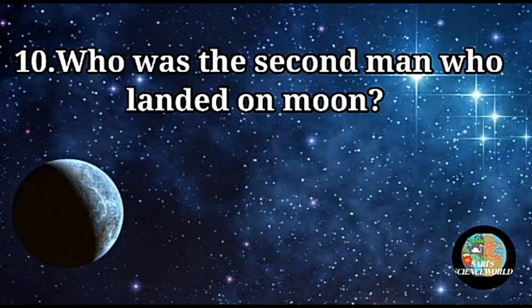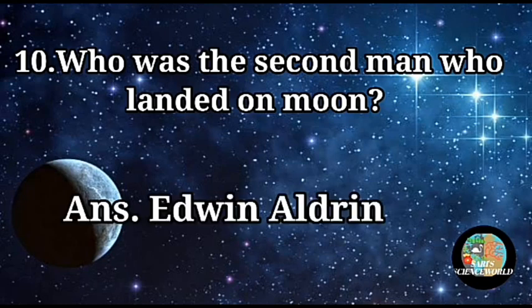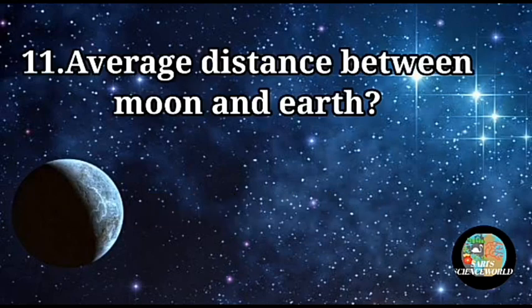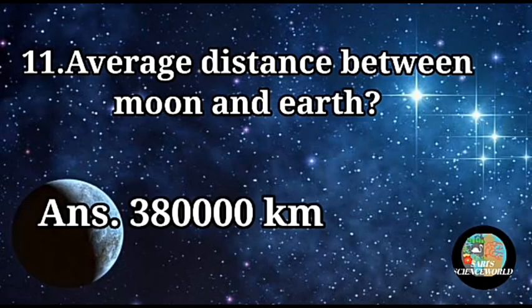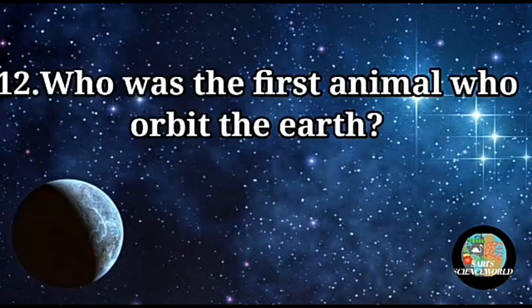10th Question: Who was the second man who landed on the moon? Answer: Edwin Aldrin. 11th Question: What is the average distance between the moon and the Earth? Answer: 3,80,000 km.